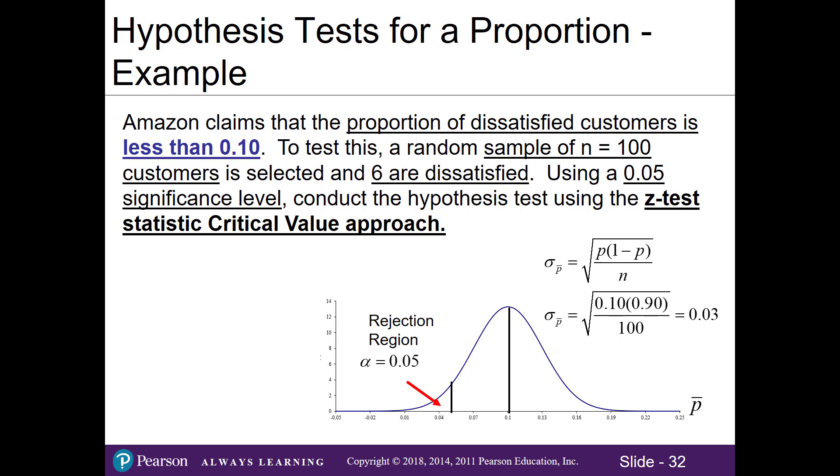Let's look at an example. Say Amazon claims that the proportion of dissatisfied customers is less than 10% or 0.10. To test this, a random sample of n equals 100 customers is selected, and it turns out six of them report being dissatisfied. Using a 0.05 significance level, which is also known as our alpha, conduct the hypothesis test using the Z test statistic critical value approach.